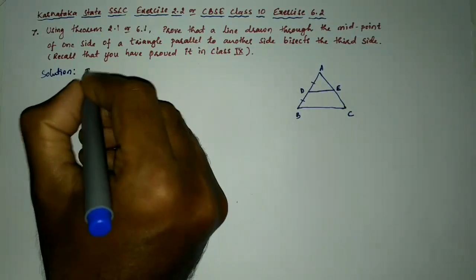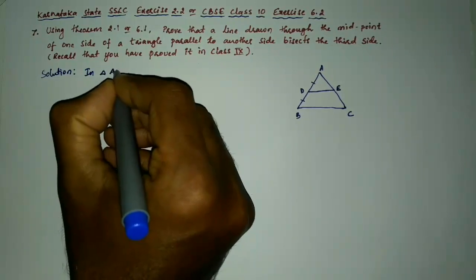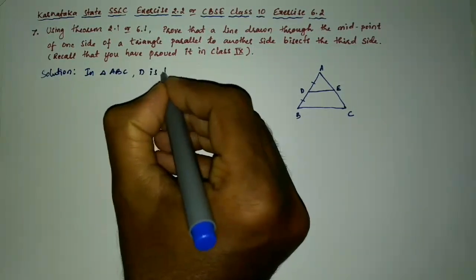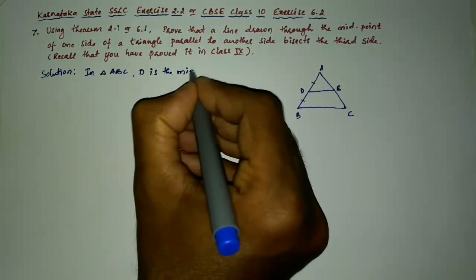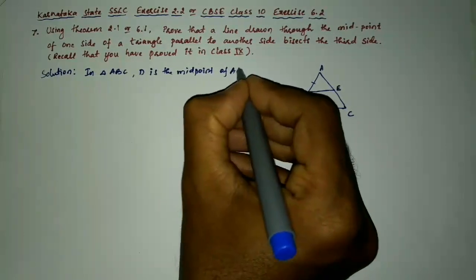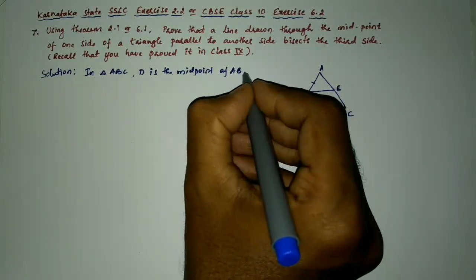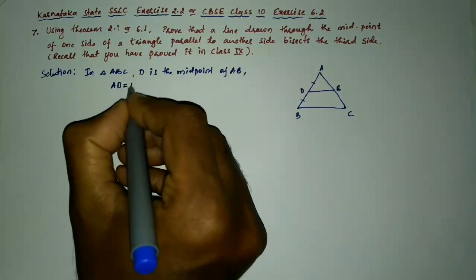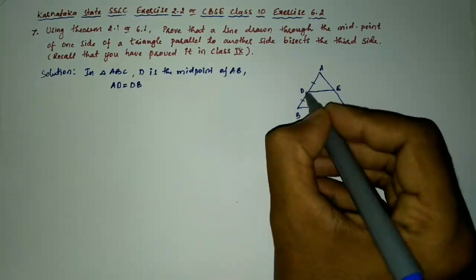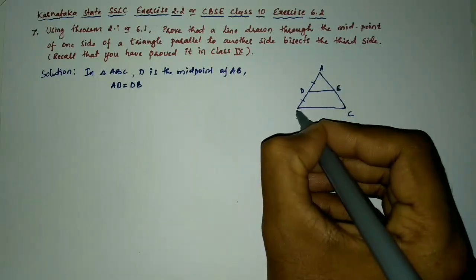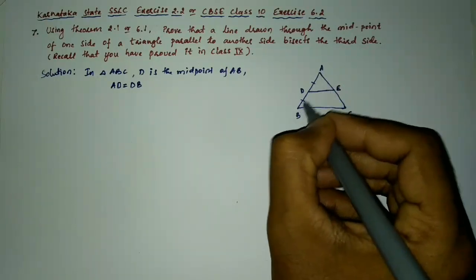In triangle ABC, D is the midpoint of AB. So hence AD is equal to DB. If it is midpoint of AB then the length of AD and DB is the same.